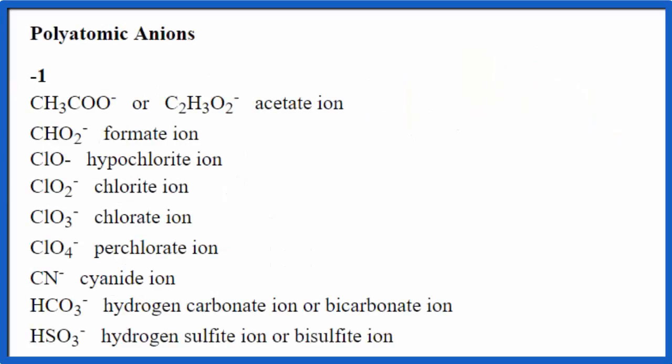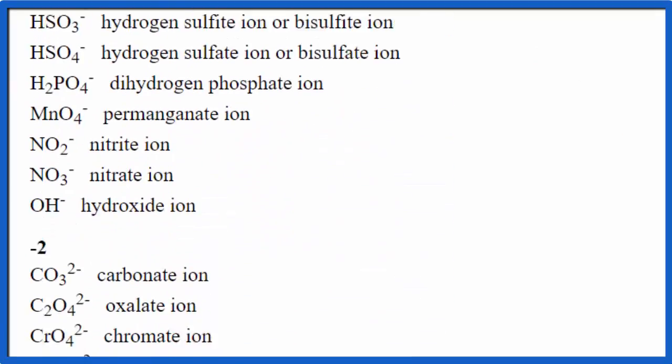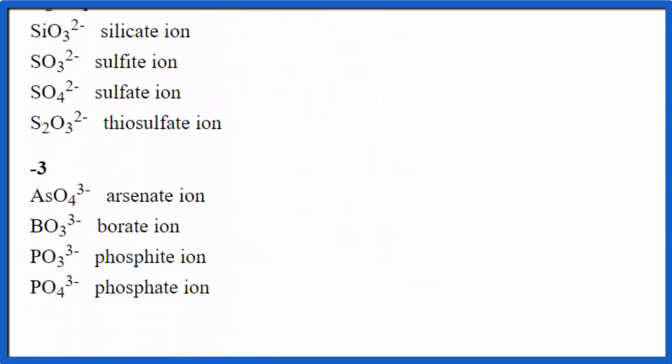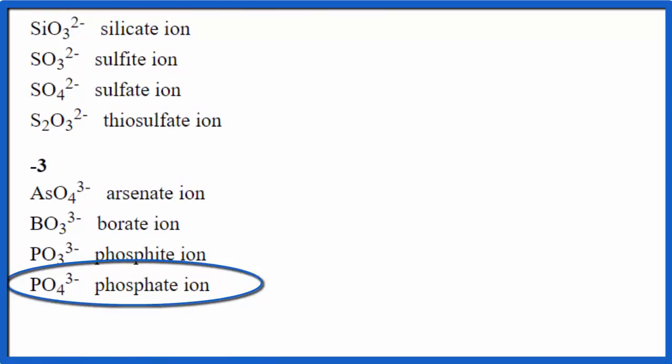So as we scroll down the table, we see the minus one polyatomic ions, the minus two, and then the minus three, and we see our PO4 three minus right here.